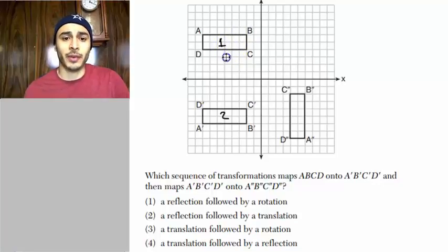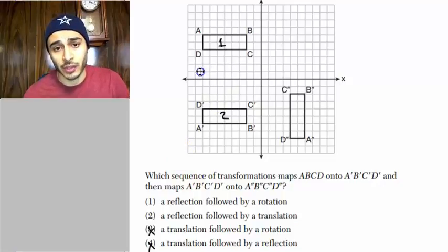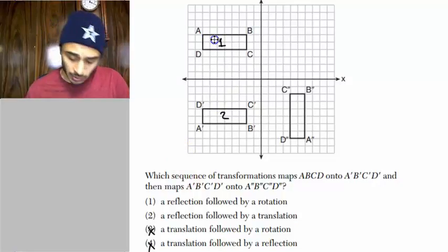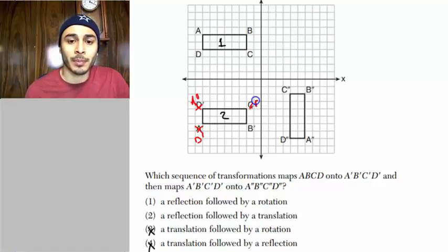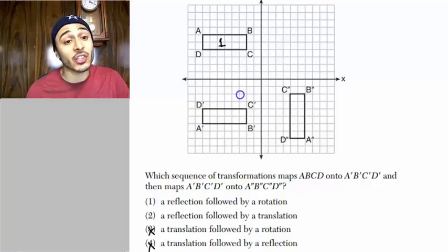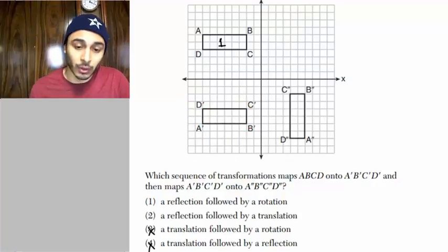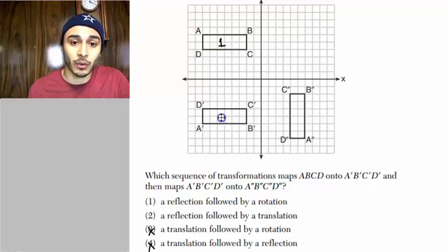Is it possible that it's a translation? The answer is it cannot be a translation. And here's why. Watch. The reason why it's not a translation is because if it was a translation, then this would be A prime, this would be D prime, this would be B prime, and then this would be C prime, if it was a translation. But that's not the case, right? We see that the orientation has been reversed. So we know that a reflection took place to go from here to here.